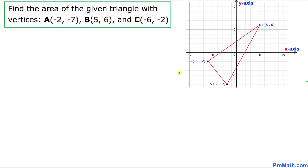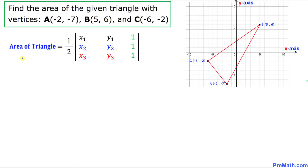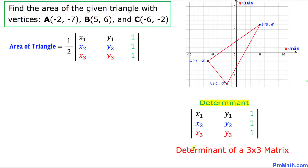Welcome to PreMath. In this video tutorial we are going to find the area of a given triangle with specified vertices. For that purpose we will be using a formula to find the area of the triangle, which equals 1 over 2 times the determinant of a 3 by 3 matrix. We are going to call this our determinant.